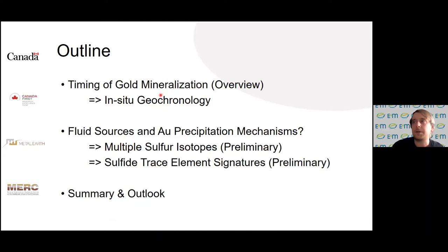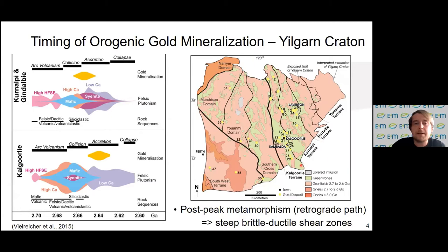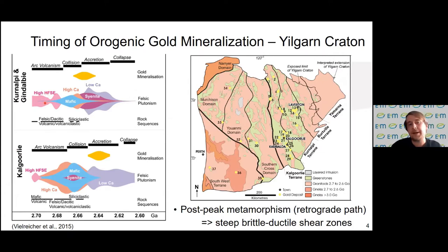Let me set the scene for the in-situ geochronology part by taking us to the continent of Australia, more specifically the western part, where we have our Yilgarn Craton exposed. I want to focus on the two north-to-south trending Kalgoorlie and Coolgardie-Gindalby terrains, because along the amalgamated border we observe a lot of orogenic gold mineralization associated with steep brittle-to-ductile shear zones. Looking at the geological timeline, we have our greenstone architecture starting with volcanic units, later intruded by dome complexes of ultramafic, mafic, and felsic compositions.